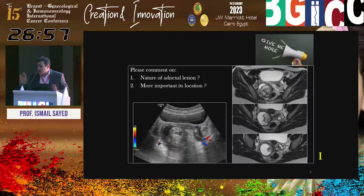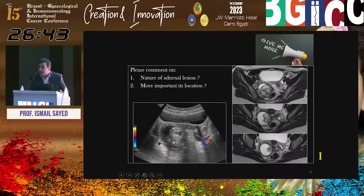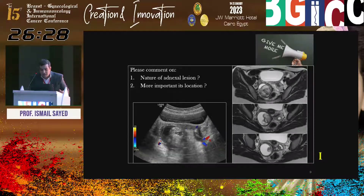I misinterpreted this hypoechoic structure as bowel, but on MRI it was the right ovary. And this structure I misinterpreted as the right ovary was actually the left ovary in the opposite position. What about this structure I misinterpreted as a left ovarian lesion — maybe dermoid? It was actually a torsed fallopian tube.